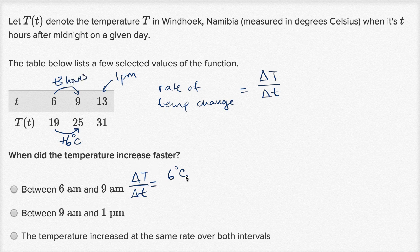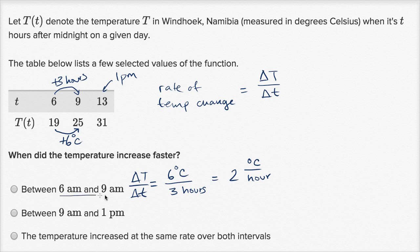So you're going to have a change of 6 degrees Celsius over a positive change of 3 hours. Over 3 hours, we increased our temperature by 6 degrees, or you could say it's an average rate of change of 6 divided by 3, which is 2 degrees Celsius per hour.